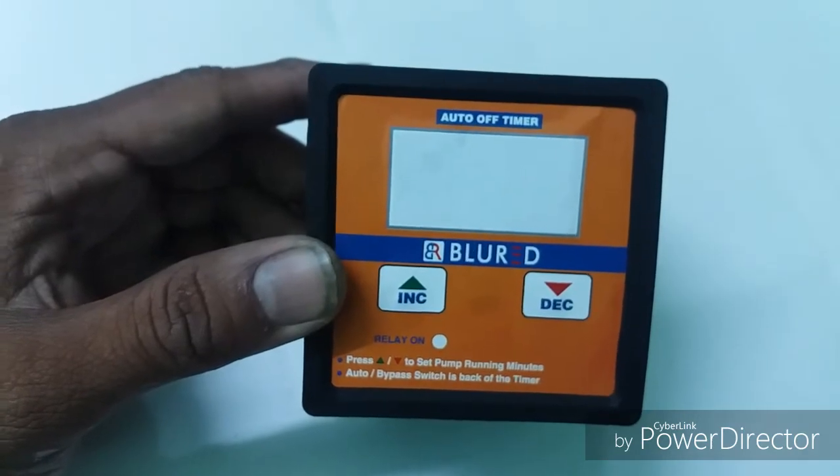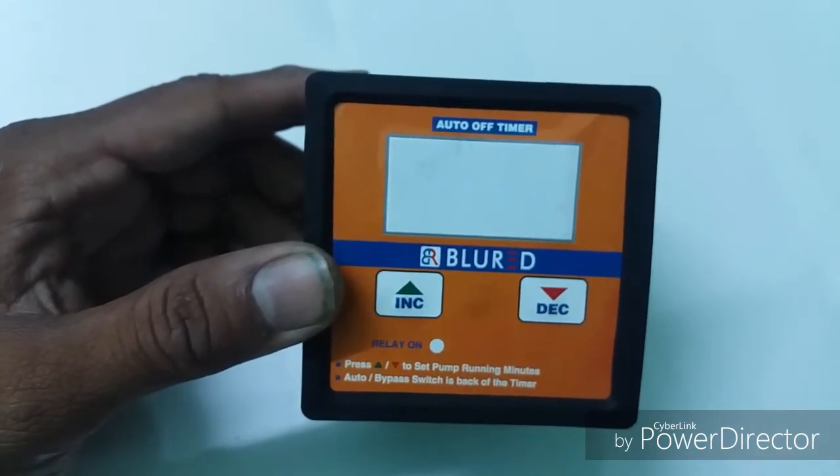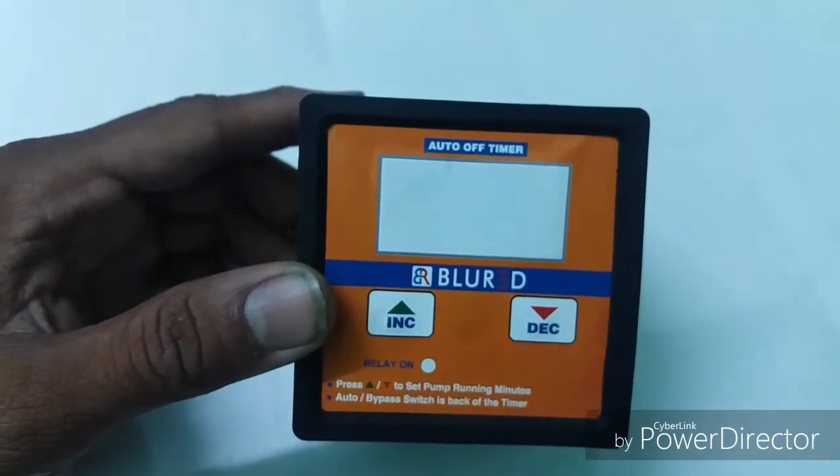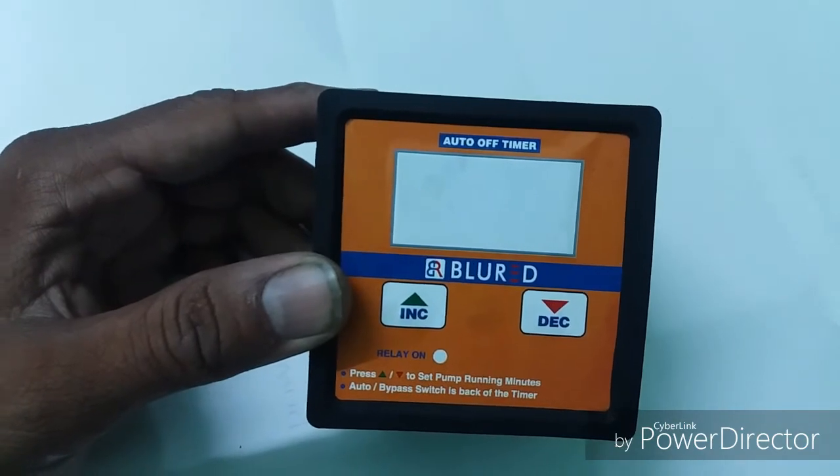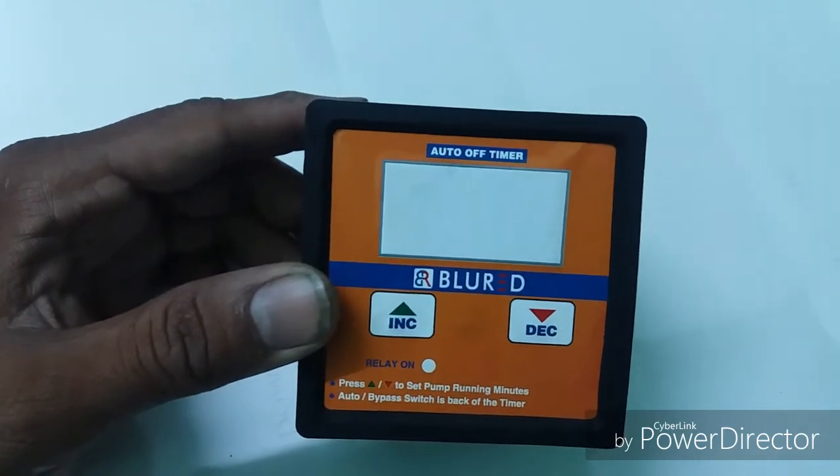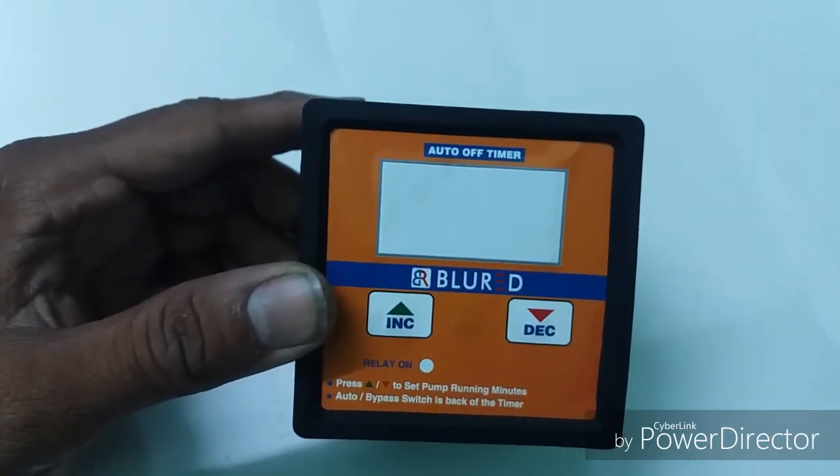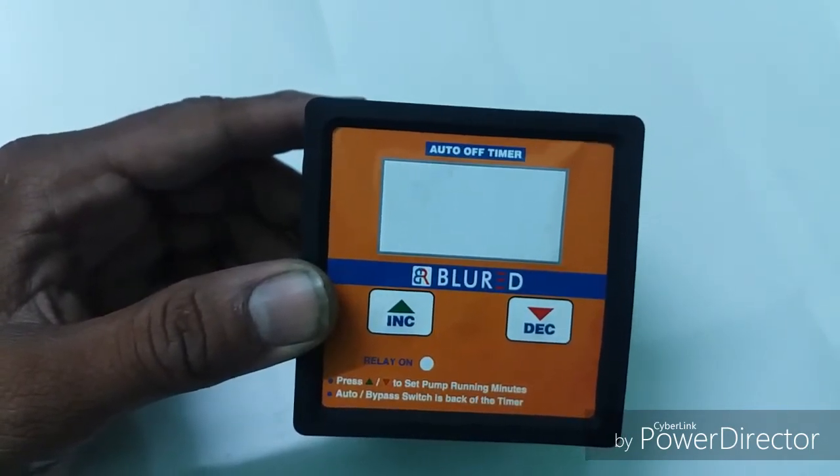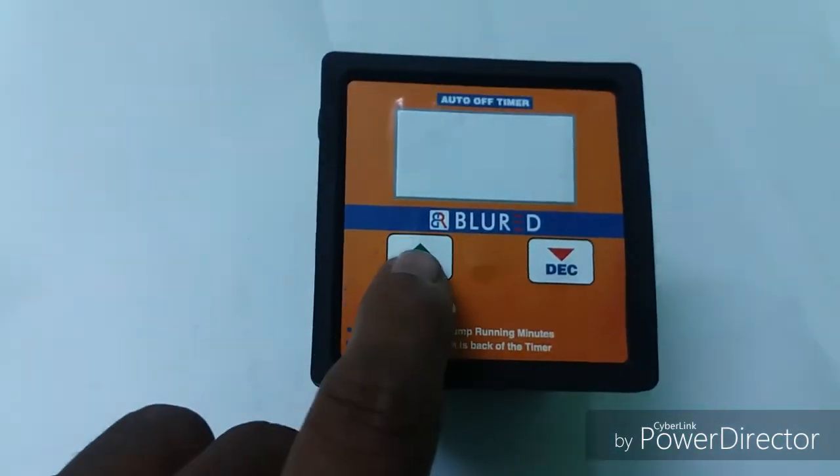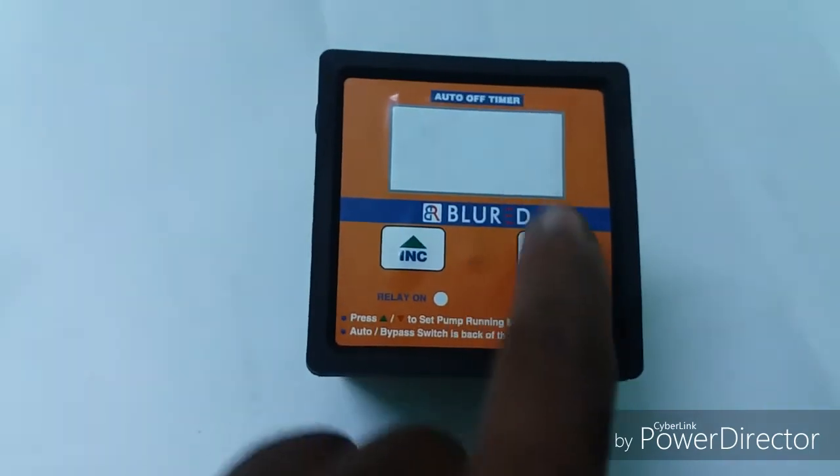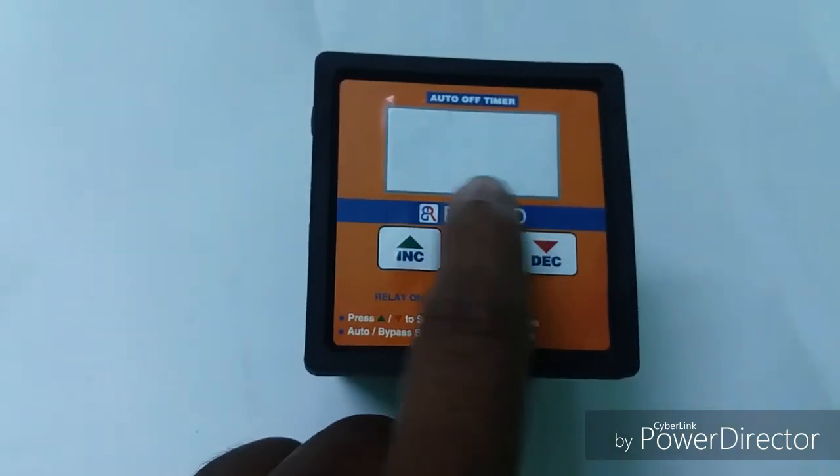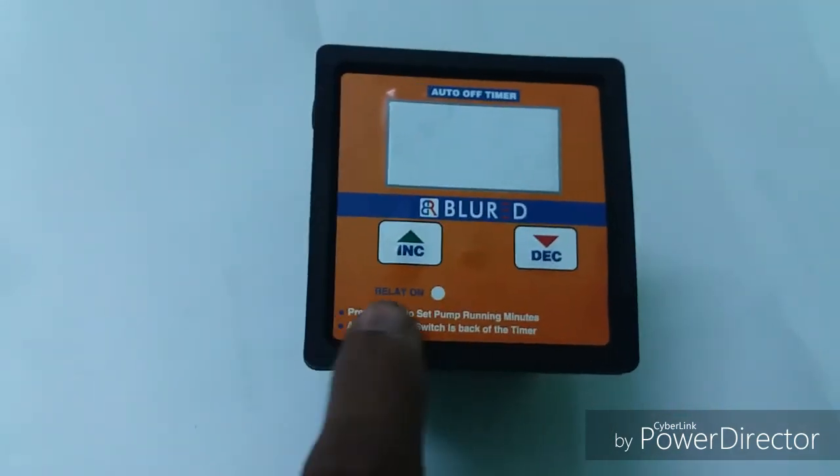You can give up to 20 amps load through this unit. In this auto off timer, we can see the minutes - how many minutes the electrical equipment or pump is going to stay in the on position. After the timing is counted, it closes the pump or the electrical equipment, which gets switched off automatically. This is the increment key. By using the increment key, you can set the time. By using the decrement key, you can decrement the minutes. You can set from 0 to 99 minutes.